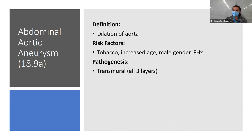Vasculitis is vessel wall inflammation — there are many types, broken down by vessel location and size. Large vessel vasculitis includes giant cell arteritis, which we already discussed. Don't memorize the entire chart — just know there are many types organized by vessel size.